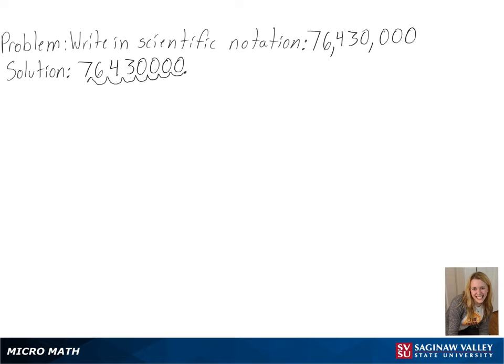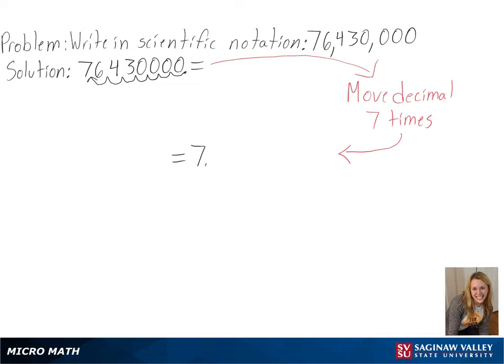And since this is a large number, we know our exponent associated with our number will be positive. So we get 7.643 times 10 to the 7th power as our final answer.